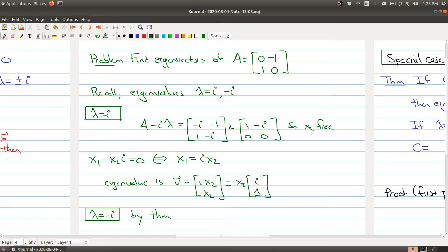So what we have is an eigenvector of lambda equals i is the vector v, which is [i, 1].